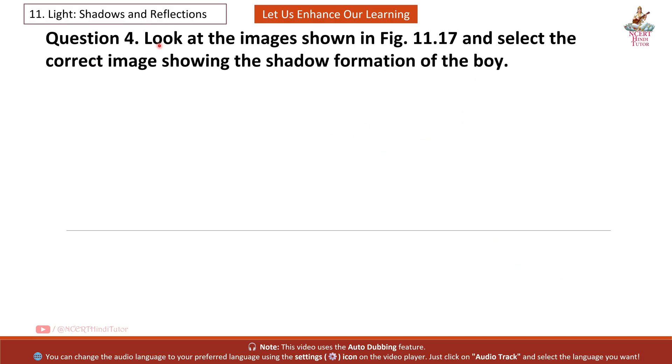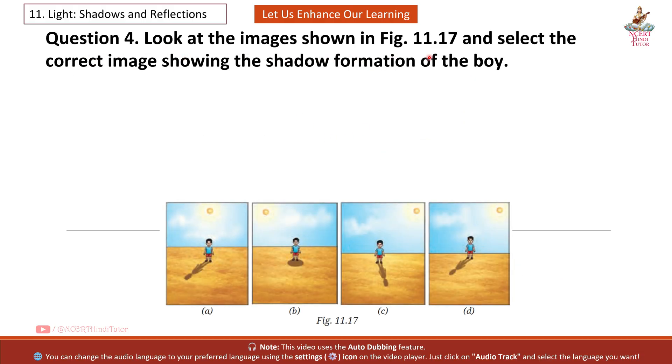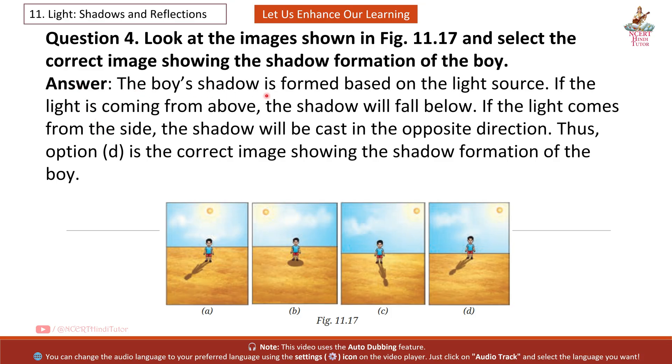Question 4: Look at the images shown in figure 11.17 and select the correct image showing the shadow formation of the boy. Answer: The boy's shadow is formed based on the light source. If the light is coming from above, the shadow will fall below. If the light comes from the side, the shadow will be cast in the opposite direction. Thus, option D is the correct image showing the shadow formation of the boy.